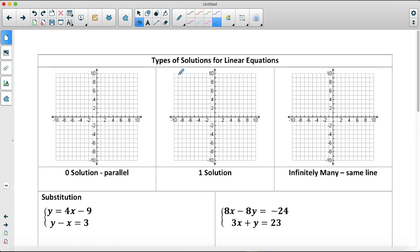The types of solutions for linear equations: we can have zero solutions when the lines are parallel, one solution, or infinitely many solutions, which means we have the same line.